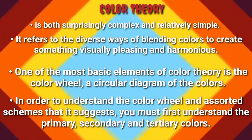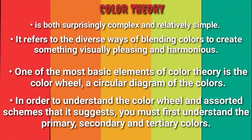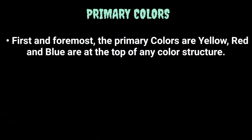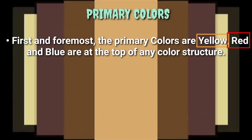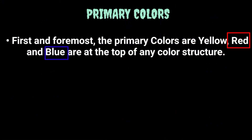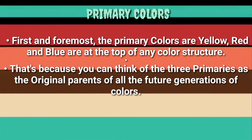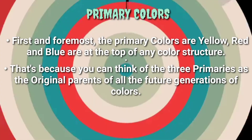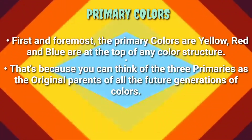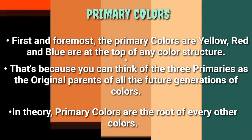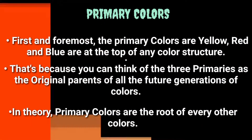Primary colors: first and foremost, the primary colors are yellow, red, and blue. They are at the top of any color structure. You can think of the three primaries as the original parents of all the future generations of colors. In theory, primary colors are the root of every other color.